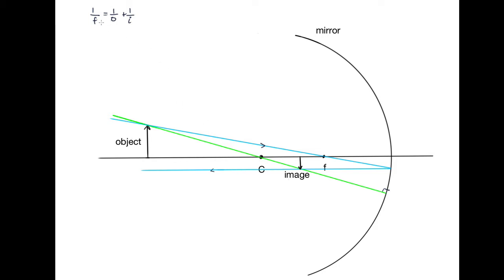Let's start by defining what F, O, and I are in this diagram. O is the distance of the object from the mirror. So the distance from here to this mirror, that is O.